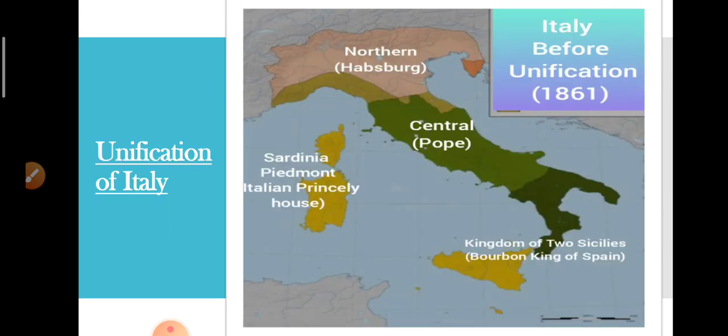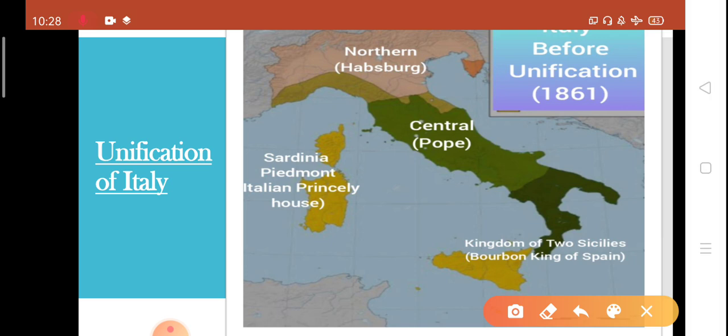This is the map of Italy that you see in front of you. Before the unification, Italy was divided into several different states. Here you can see that Italy has been divided into four different parts. Italy was actually divided into seven different states, but we will talk about the four major different parts Italy was divided into.